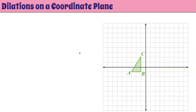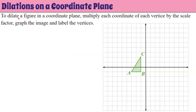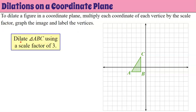We can also dilate on a coordinate plane. I have triangle ABC in the coordinate plane. To dilate a figure in the coordinate plane, we multiply each coordinate of each vertex by the scale factor, then graph the image and label the vertices. Our instructions are to dilate triangle ABC using a scale factor of three. We know it will be an enlargement because the scale factor is greater than one, and it will be similar to the original green triangle ABC.